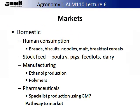Now let us look at the markets. It is important to familiarise yourself with the markets, and they essentially fall into domestic and export. In the domestic markets for agronomy, this tends to be a mixture of: for human consumption such as bread, biscuits, noodles, malt, breakfast cereals; stock feed for poultry, pigs, feedlots, dairy, sheep; manufacturing for ethanol production and polymers; and manufacturing for pharmaceutical industries. Often the pharmaceutical industries do require the planting of specially genetically modified or GM plants, and you need to understand the components of this.